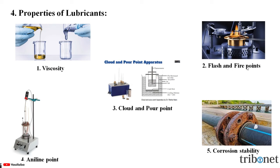The second property is flash and fire point. Flash point is the lowest temperature at which the lubricant oil gives off enough vapors that ignite for a moment when a tiny flame is brought near it. While the fire point is the lowest temperature at which the vapors of the lubricating oil burn continuously for at least five seconds when a tiny flame is brought near it. A good lubricant should have a flash point at least above the temperature at which it has to be used. This safeguards against the risk of fire during use of lubricant.